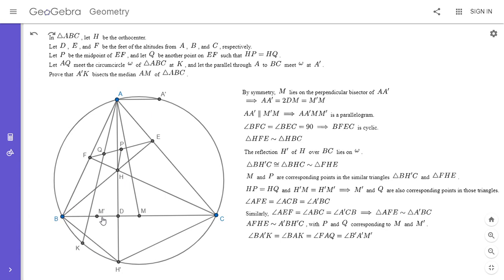So one way to do that is to show that angle BA prime K is equal to angle BA prime M. So I'm going to show you here how I do that. So we have angle BA prime K is equal to angle BAK, which is equal to angle FAQ. That's clear.